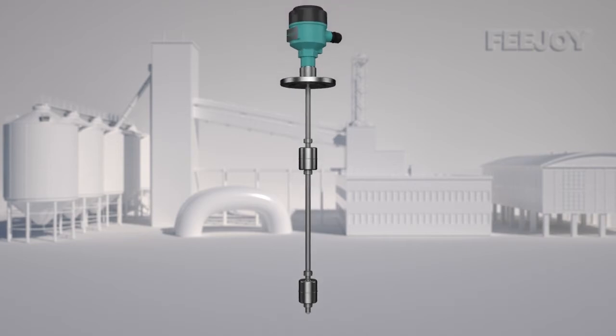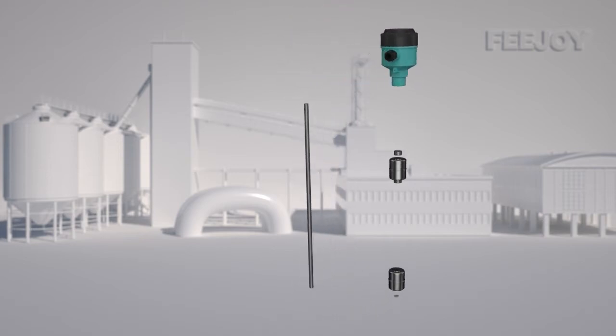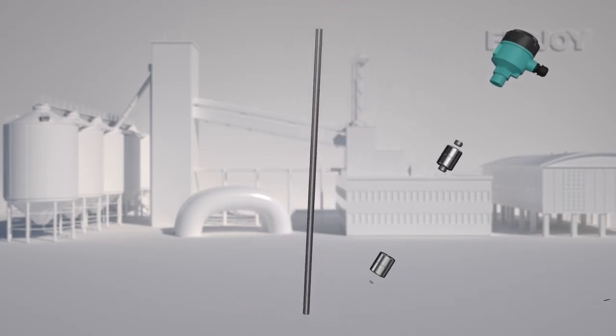The liquid level controller with simple structure is usually composed of a non-magnetic metal guide rod, reed switch, float and a junction box.